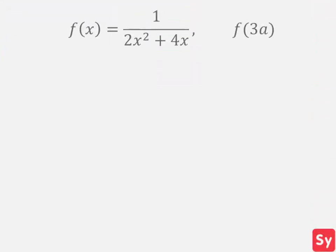Next example. We have f of x equals 1 over 2x squared plus 4x, and f of 3a, where 3a is our argument.